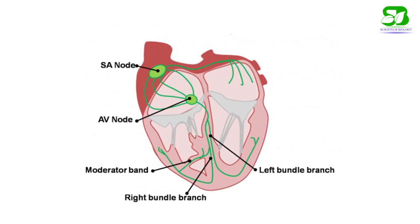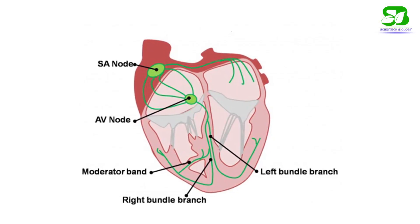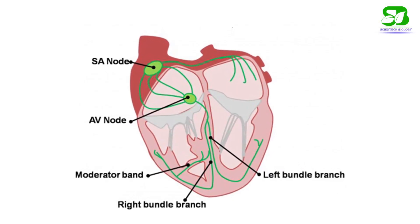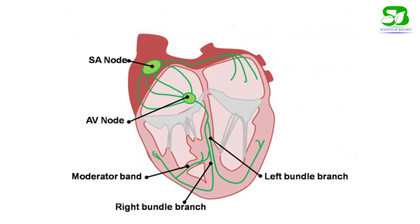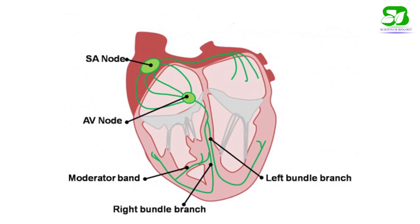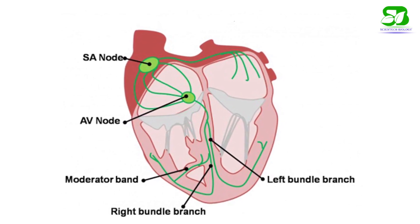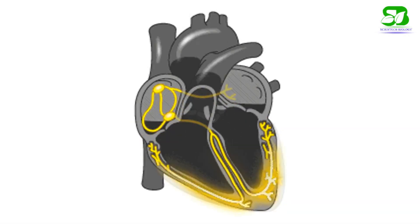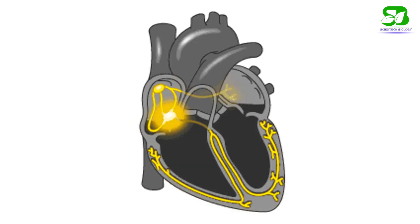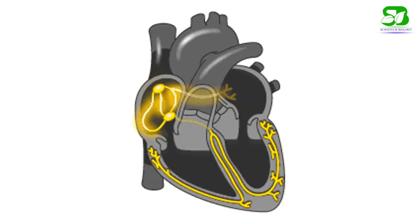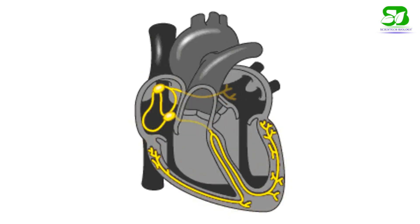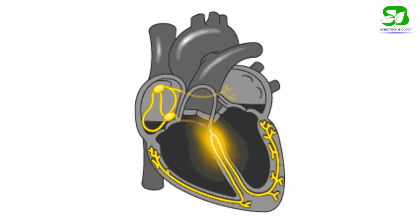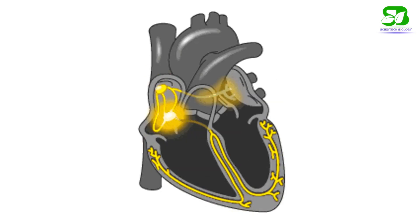The SA node is situated in the right atrium at the junction of the superior vena cava and right atrial appendage. In the heart, the cardiac impulse normally originates in the SA node and spreads all over the heart, as a result of which the heart beats.